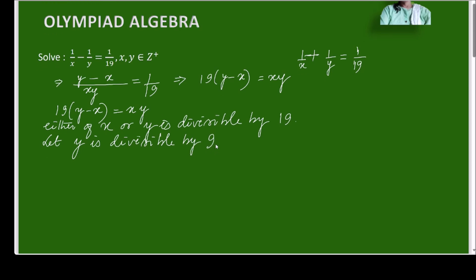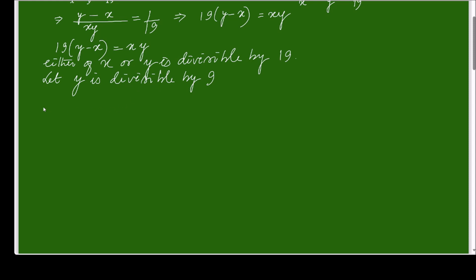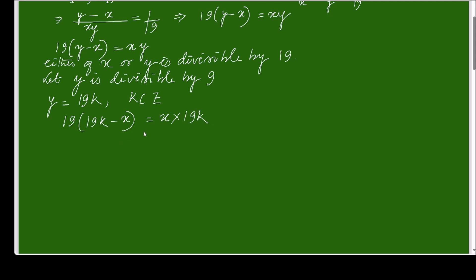When y is divisible by 19, I can write y equals 19k, where k is an integer. Substituting in place of y, I get 19 times (19k minus x) equals x times 19k. Cancelling 19 from both sides, I get 19k minus x equals kx.